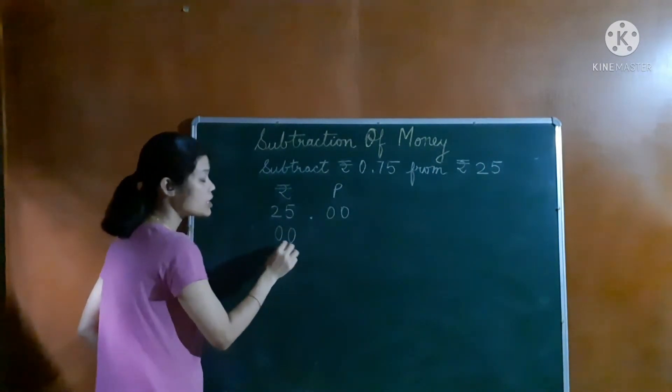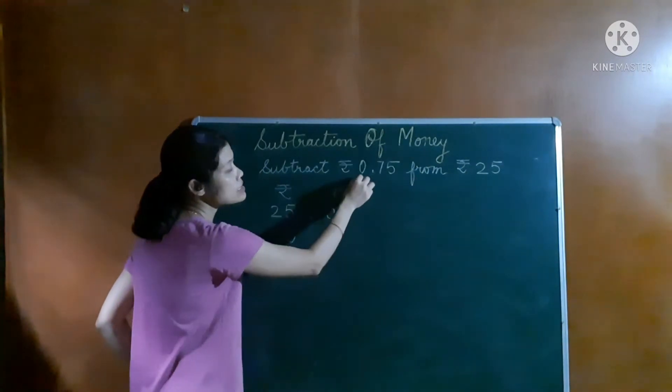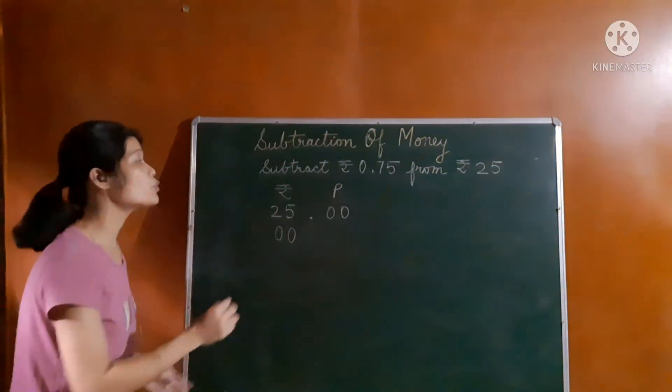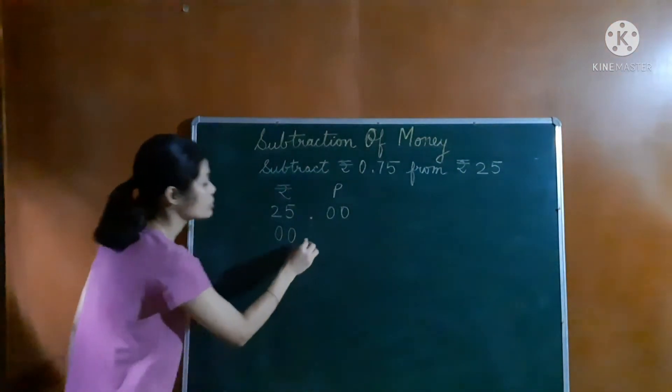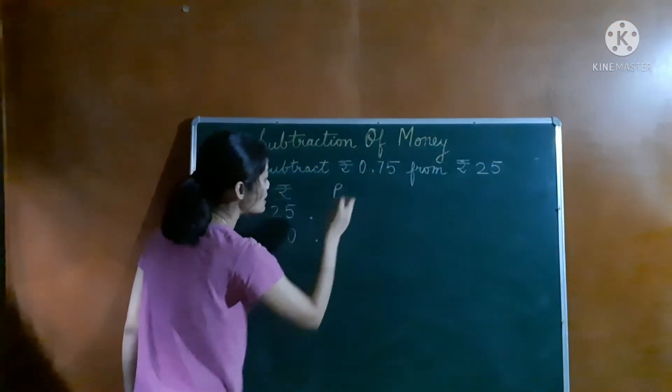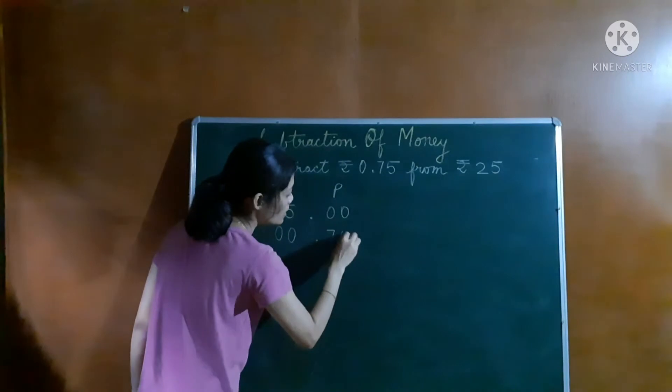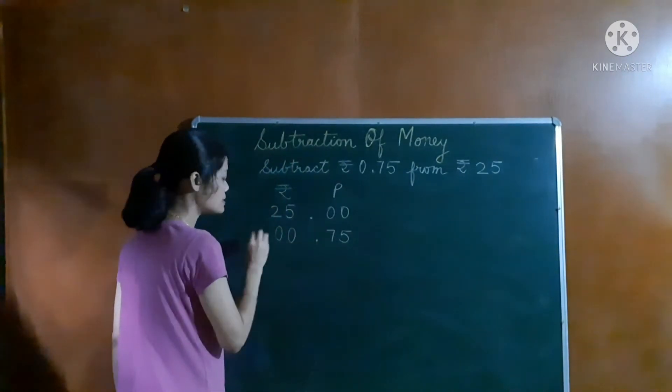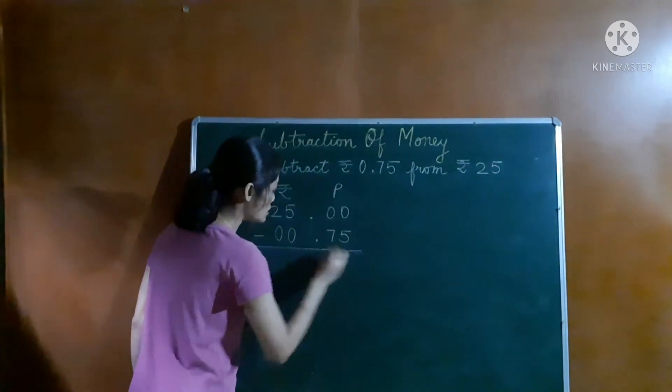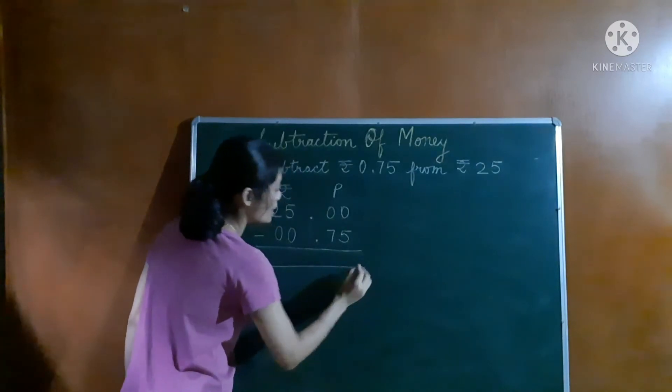It doesn't matter if we are putting 1 zero or 2 zeros, since in the question, the amount of rupees is 0. And then, paise is how much? 75. So we will write here 75. This way we will first arrange it.